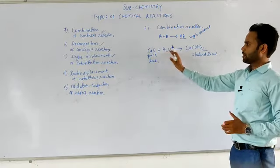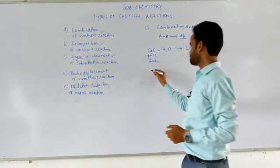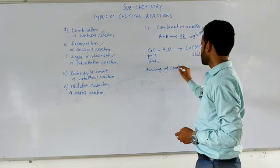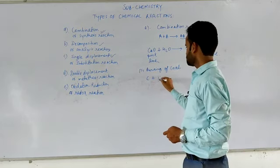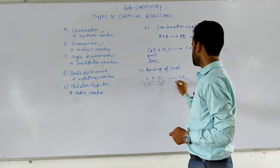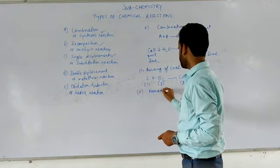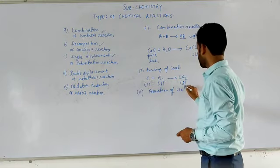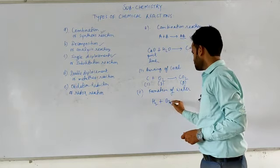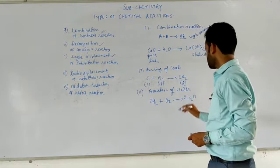Two compounds combining and forming a single product — we can take examples. Like burning of coal: C plus O2 gives CO2, where C is solid, O2 is gaseous, and CO2 is also gaseous. Another example is the formation of water: H2 plus O2 gives H2O — you can balance it by adding the appropriate coefficients.